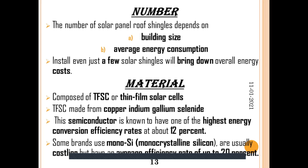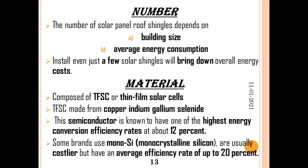This semiconductor is known to have one of the highest energy conversion efficiency rates at about 12%. Some of the PV shingle brands use monocrystalline silicon, which are usually costlier but have an average efficiency rate of up to 20%.